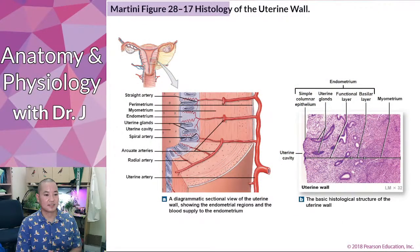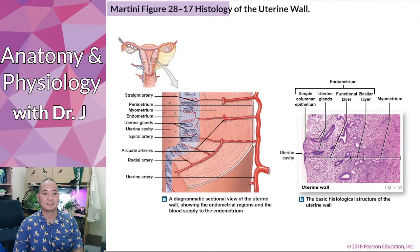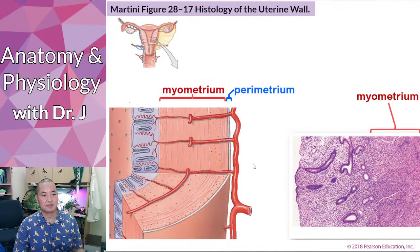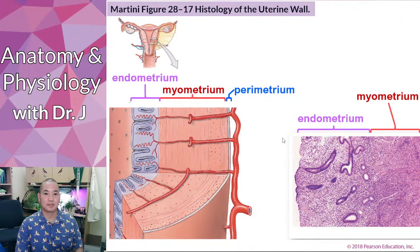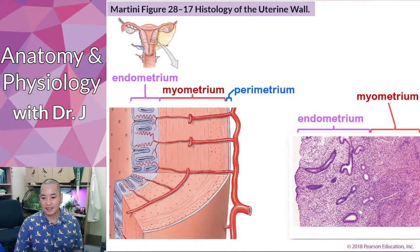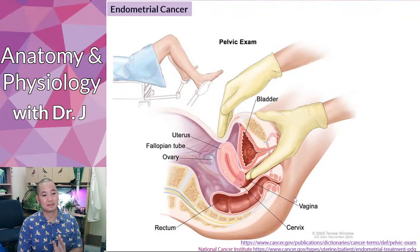Looking inside the uterine wall, there are three main layers. The perimetrium is the outer covering. The myometrium is the muscular middle layer — myo meaning muscle. The endometrium is the innermost layer, shed with every menstrual cycle — endo meaning inner.